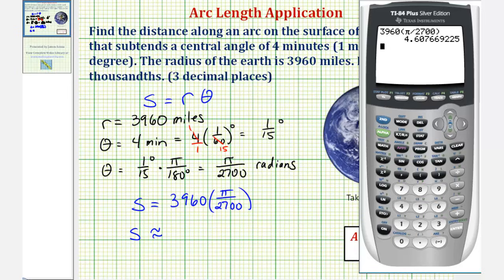To three decimal places, the arc length would be approximately four point six zero eight, and because the radius is in miles, the arc length is in miles. So the arc length is approximately four point six zero eight miles.